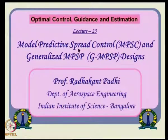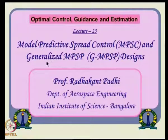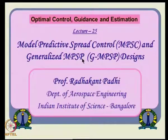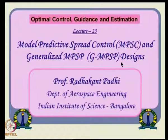Here we will talk about something called model predictive spread control, very close to static programming, but we will also see a slightly different version — a parameterized version and all that. We will also see a very recent development, something called generalized MPSP. That means we do not want to deal in the discrete domain, but we want to develop this entire procedure in the continuous time domain, where discrete time turns out to be a special case.